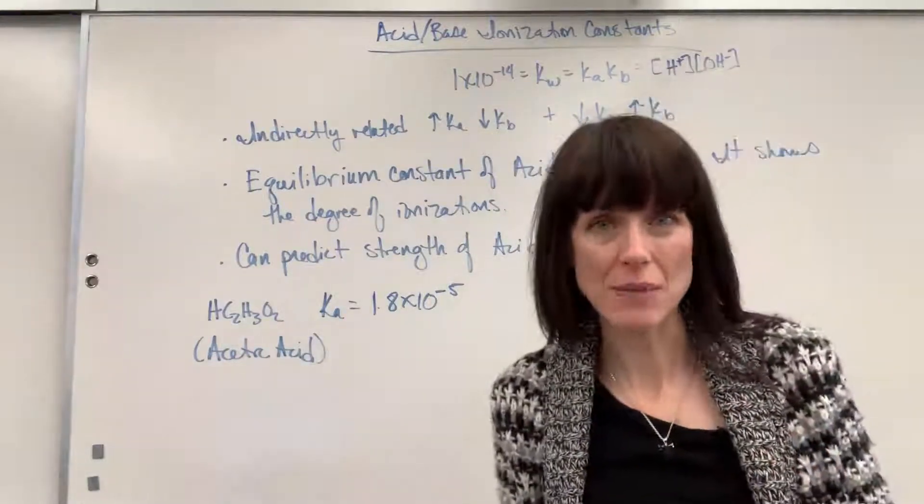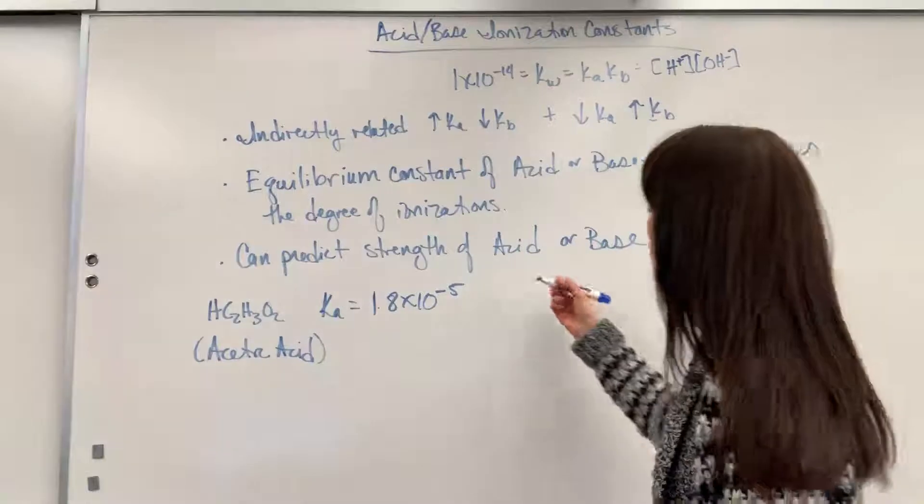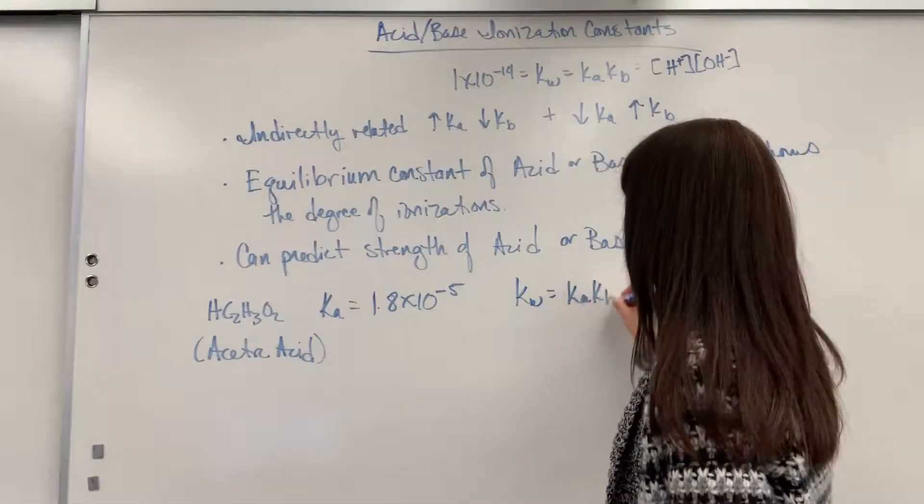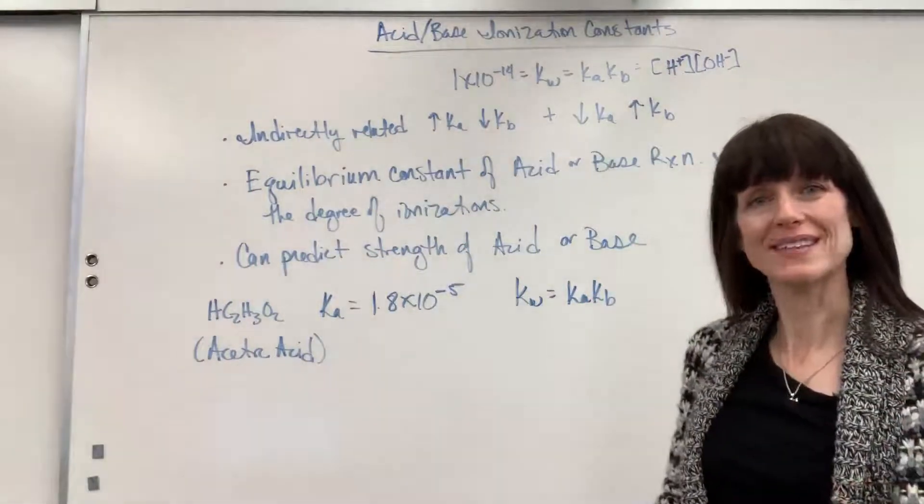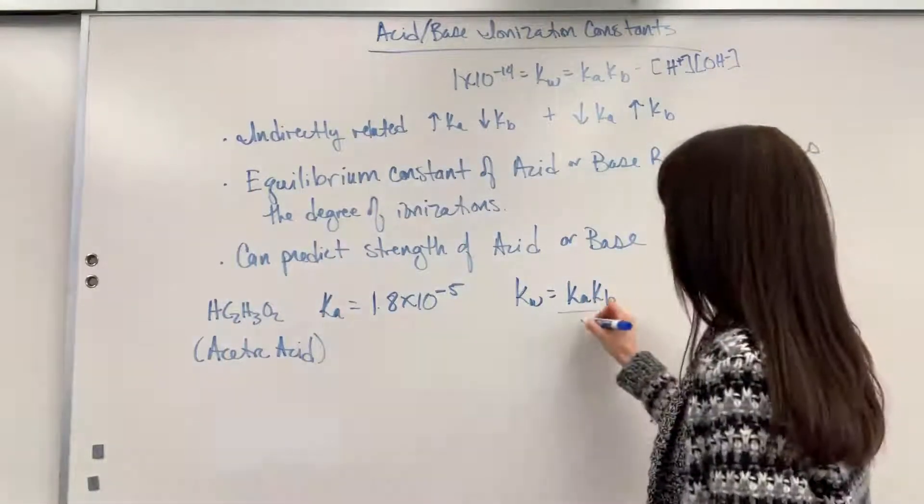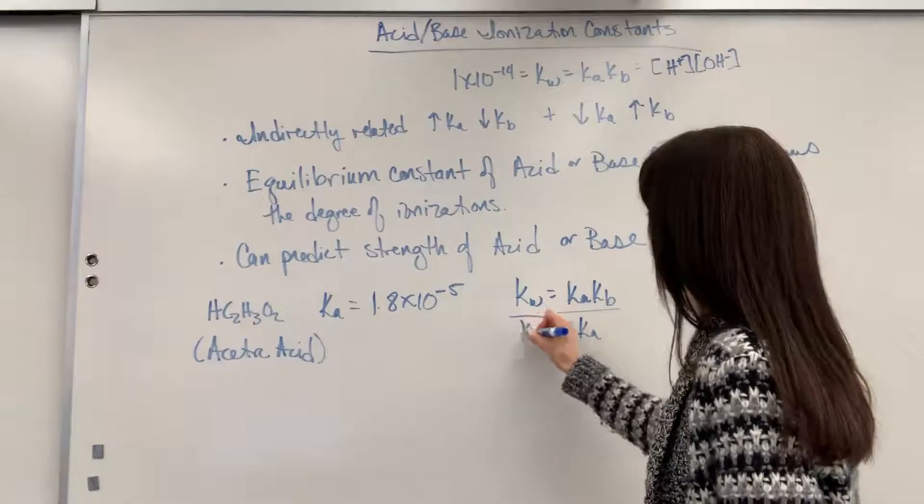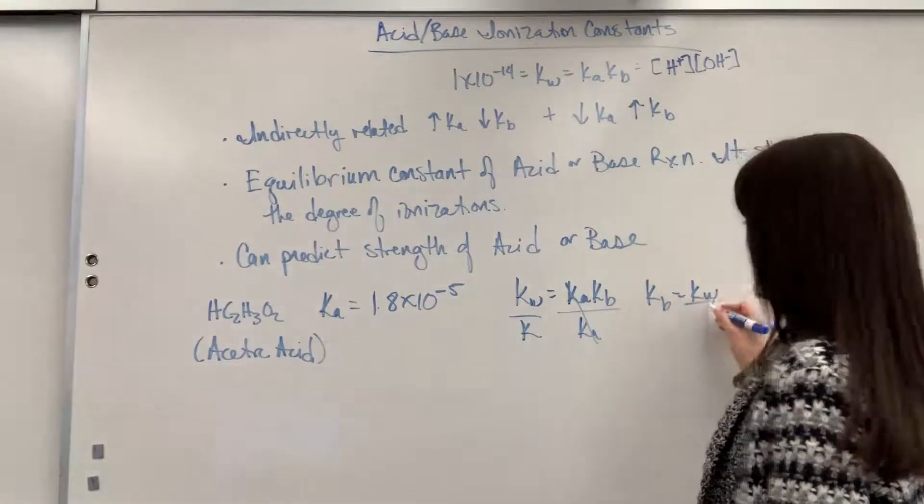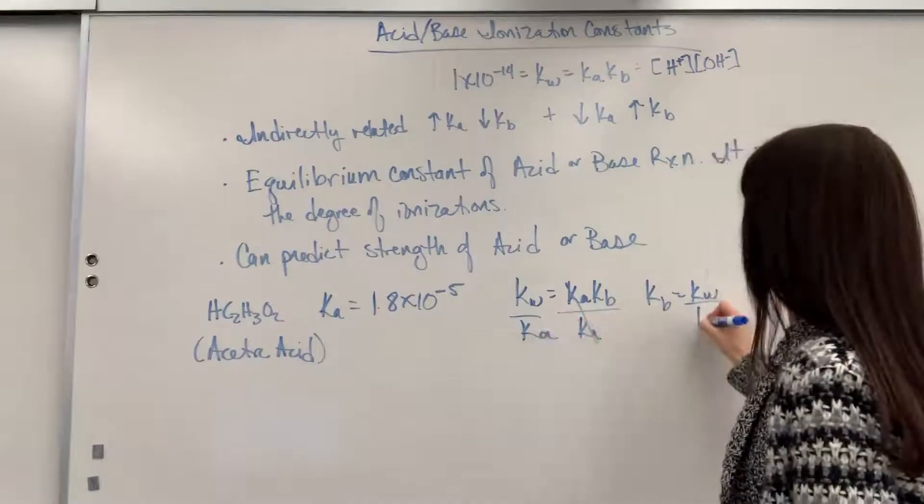And we want to know, well, what's the Kb? Okay, let's plug it into our formula. We've got Kw equals Ka times Kb. I'm going to go ahead and solve for my Kb. That's what I want. Let's divide both sides by the Ka. We're going to get Kb equals Kw divided by our Ka.